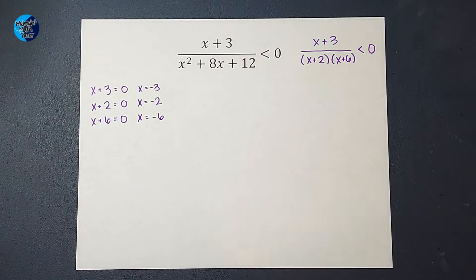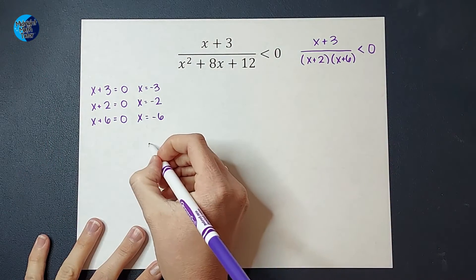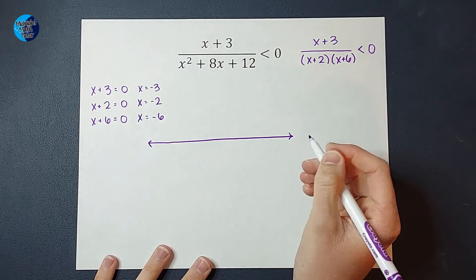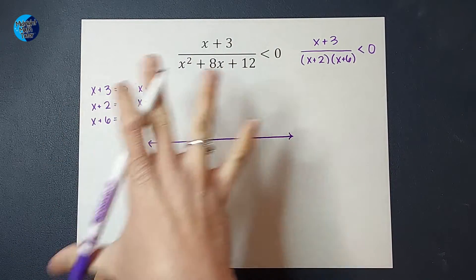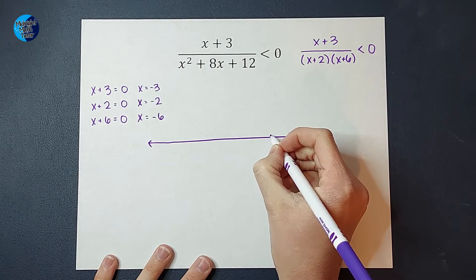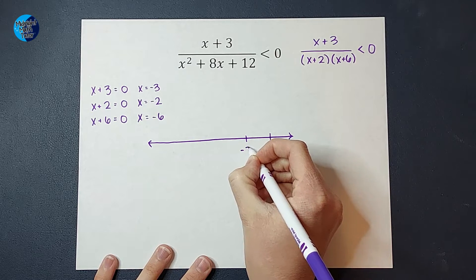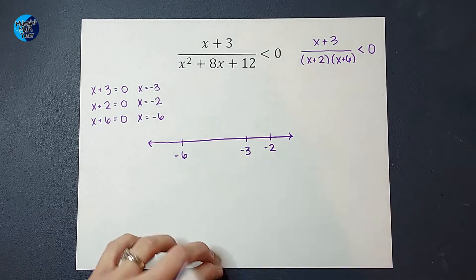All right, the next thing we're going to do is set up everybody's favorite thing, a number line. Inequalities and number lines are best friends probably forever. So I'm going to graph or plot might be a better word, each of these points on my number line. So I'm going to have negative 2, negative 3, and negative 6 would be about here. It doesn't have to be perfectly spaced.